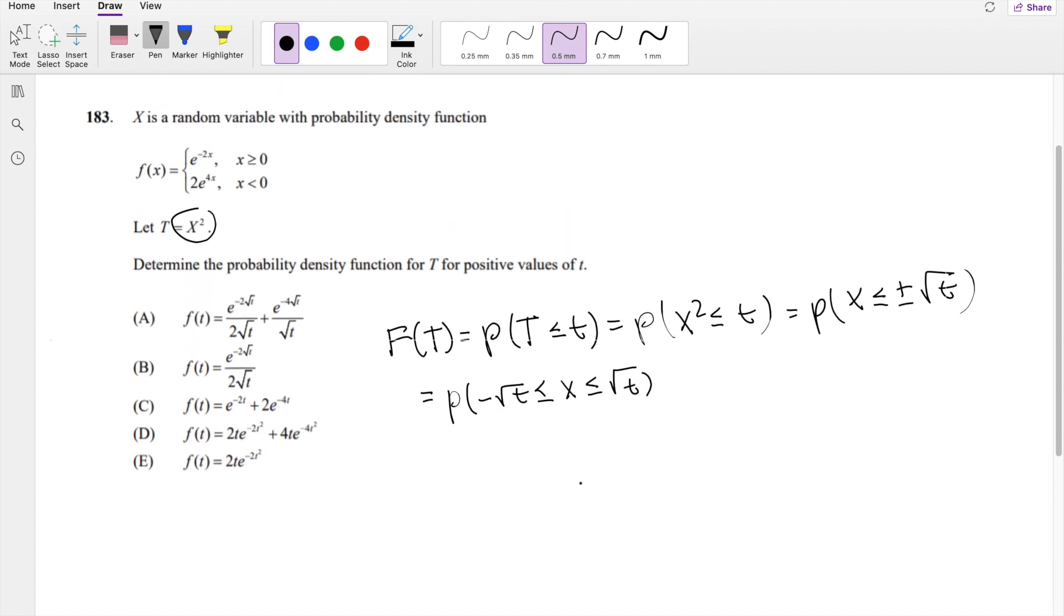So this is actually just the x function, which we know f of x right here. So we can actually put it in terms of that. But because at 0 there's a discontinuity, we have to split it into 2.